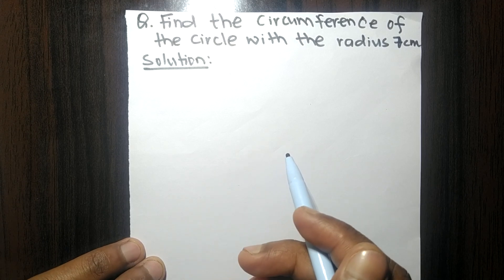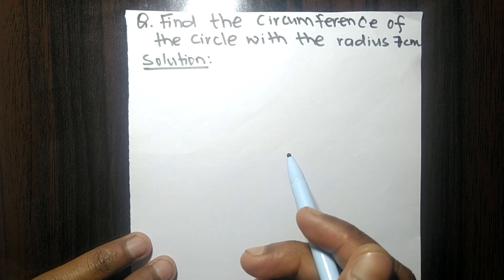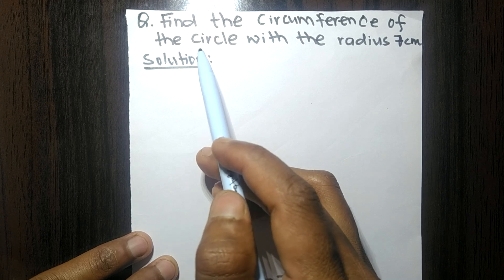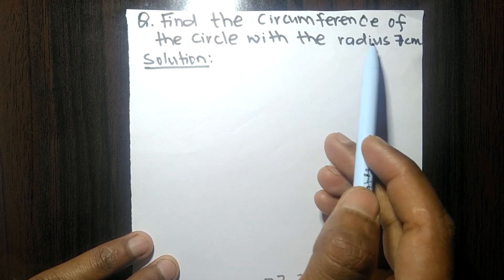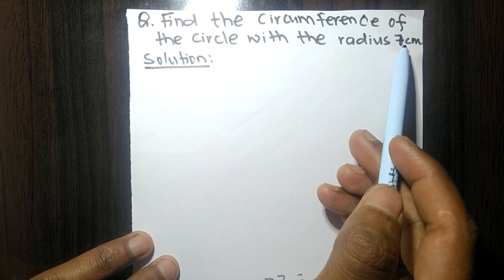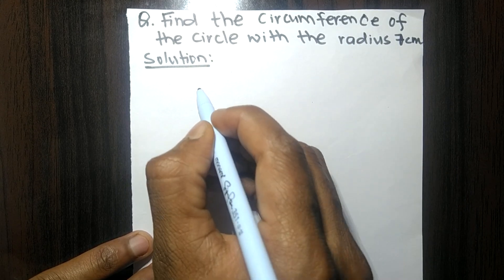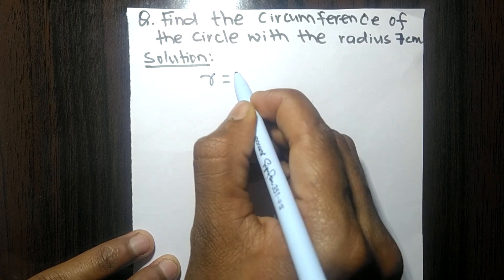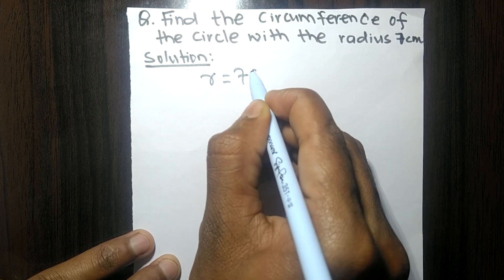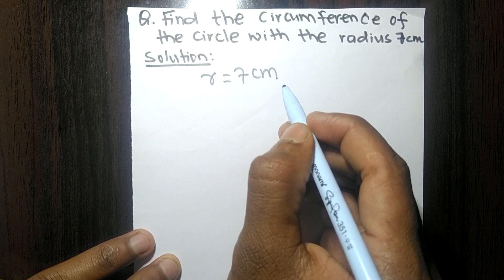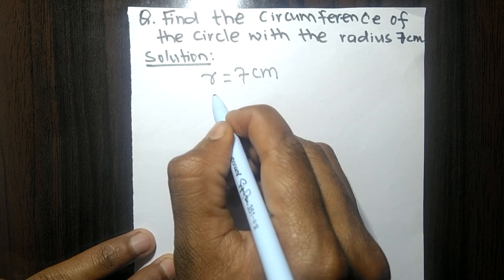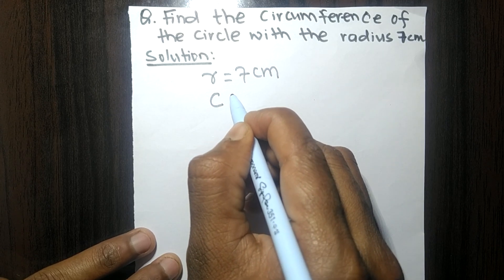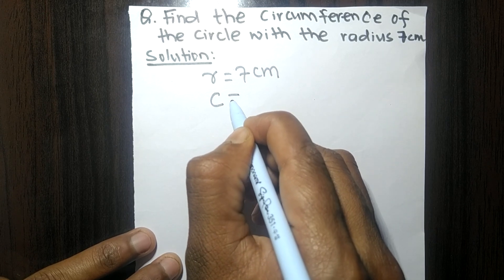Today in this video we have been given: find the circumference of the circle with a radius of 7 centimeters. The radius of the circle is 7 centimeters, and we have to find out its circumference.